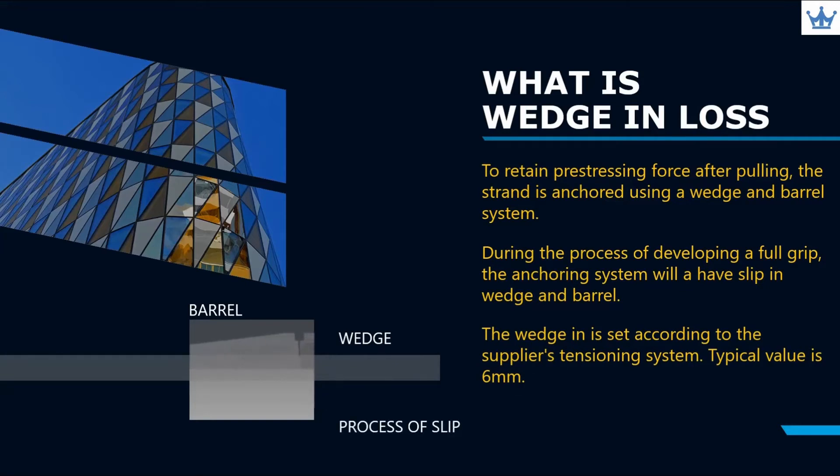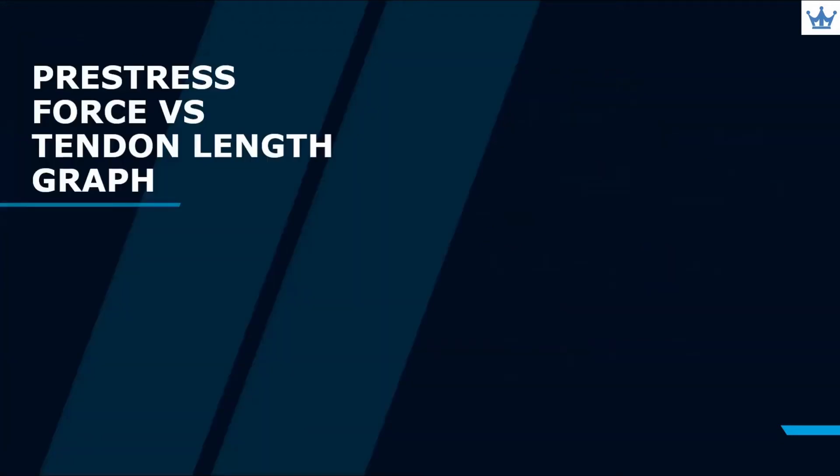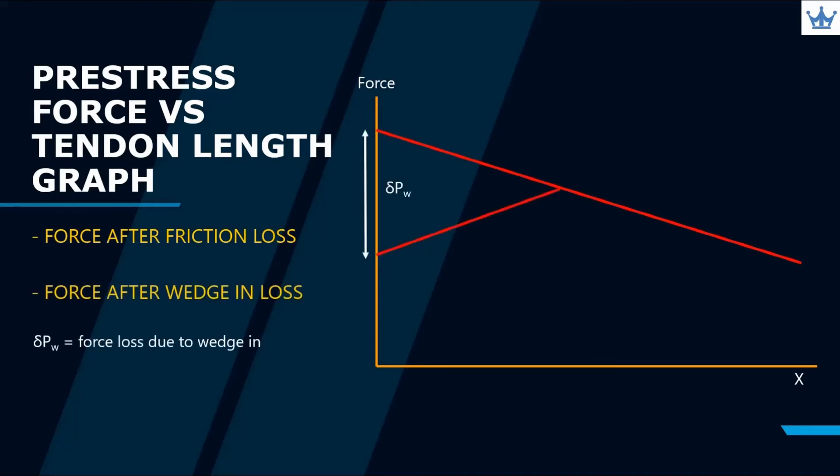This is a pre-stress force versus tendon length graph. From the jacking force, the force is gradually reduced in a slope due to friction loss. However, after wedge-in occurs in a locking system, the force is further reduced along the affected length, L'.